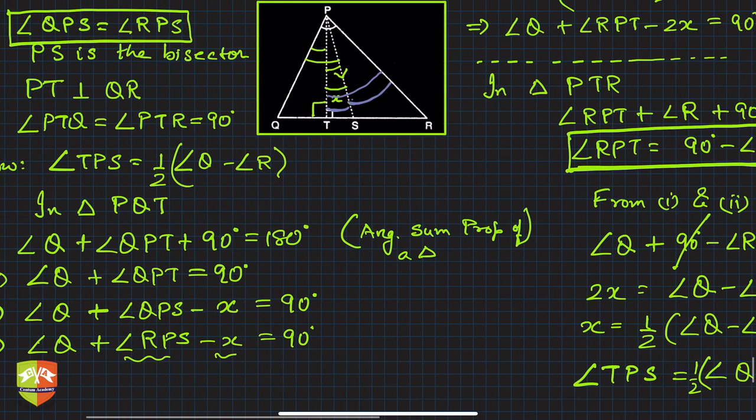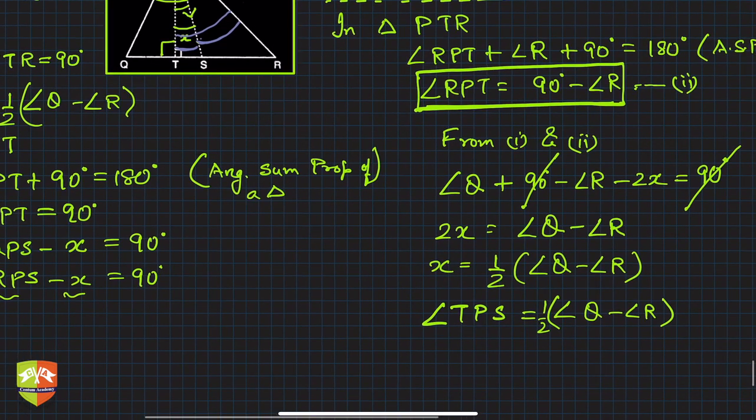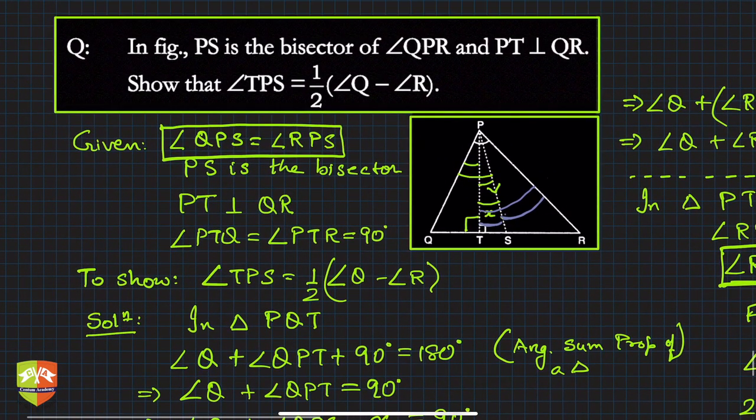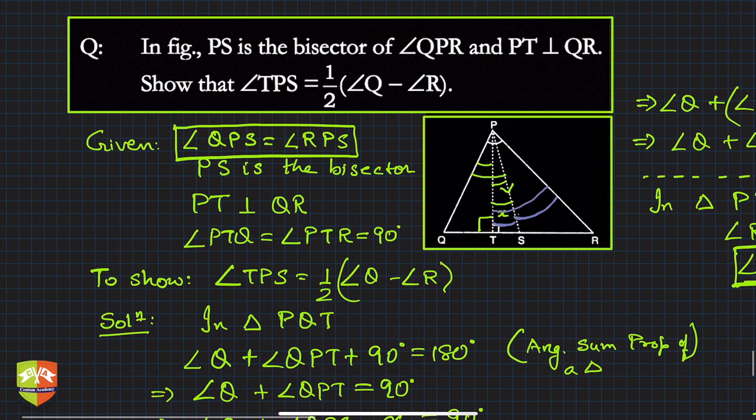This is what we had to prove and we have proved it. You can write 'hence proved.' So what is the learning in this question? Use of angle sum property. So whenever some angles are given in the triangle, you can always use angle sum property to find other angles of the triangle.